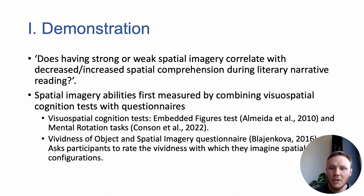Participants' spatial imagery abilities could first be assessed by combining visuospatial cognition tests with questionnaires. Participants could undertake the Vividness of Object and Spatial Imagery Questionnaire, which asks participants to rate the vividness with which they imagine certain spatial configurations — like the layout of a bedroom, how well they imagine the location of a house on a city map.